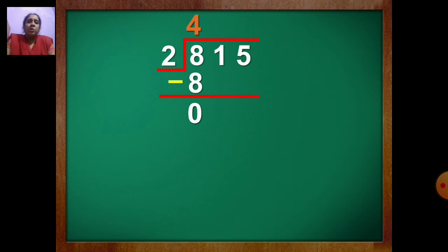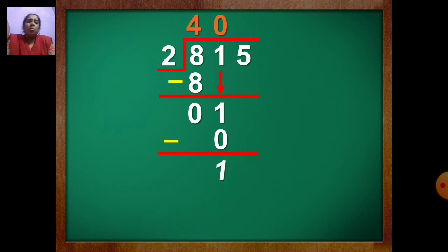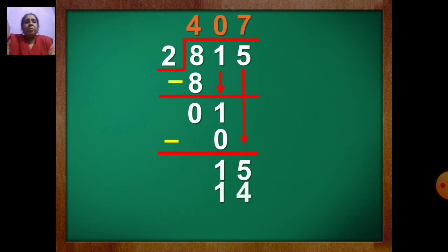Now bring the next number, that is 1, down. Now 1 is small and 2 is big — you cannot divide. So you will take 0. 2 zeros are 0. Write 0 up and 0 down. Draw the line. Now you can subtract — 1 minus 0 is 1. Now bring 5 down. Now it is 15. In table of 2, which number less than 15 will you take? 2 sevens are 14. So you will write 7 up, 14 down. Draw the line, put the sign of minus. 5 minus 4 is 1, and 1 minus 1 is 0.